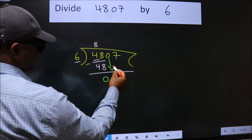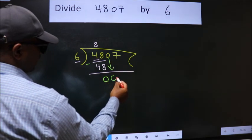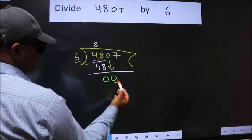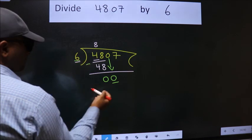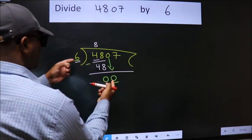After this, bring down the beside number. So, 0 down. Here we have 0, here 6.